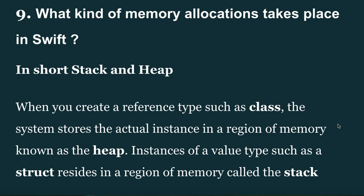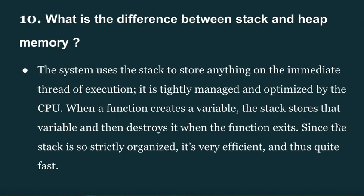What kind of memory allocations take place in Swift? There are stack and heap. When you create a reference type such as a class, the system stores the actual instance in a region of memory known as the heap. Instances of a value type such as a struct reside in a region of memory called the stack.